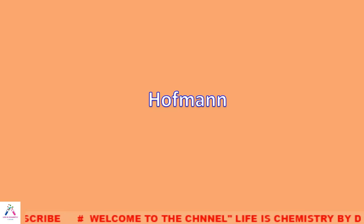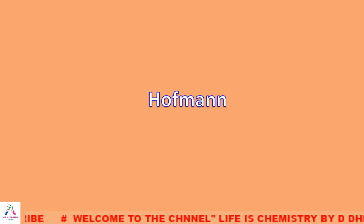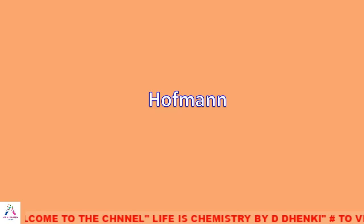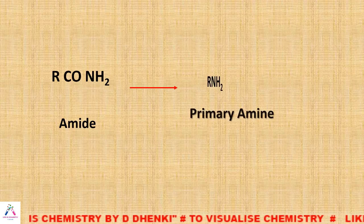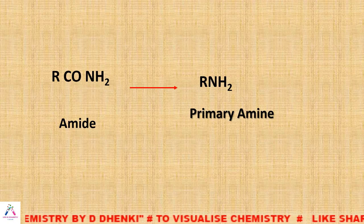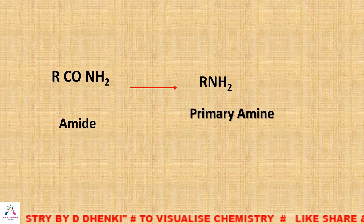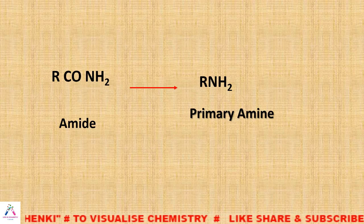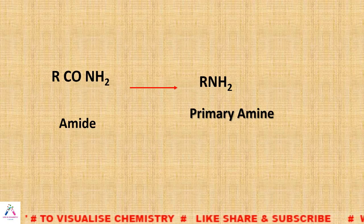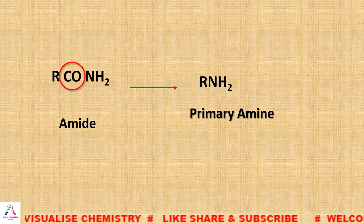The other rearrangement reactions — Curtius, Schmidt, or Lossen — can be discussed in another video. The primary goal of this reaction is to convert the acid amide, which is the derivative of carboxylic acid, to a primary amine.